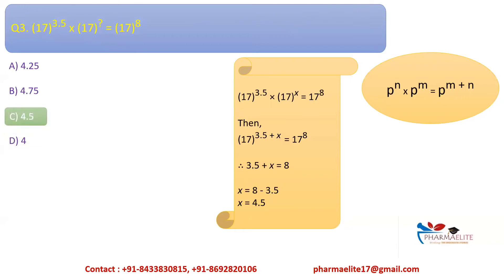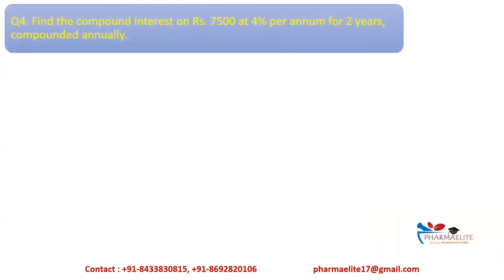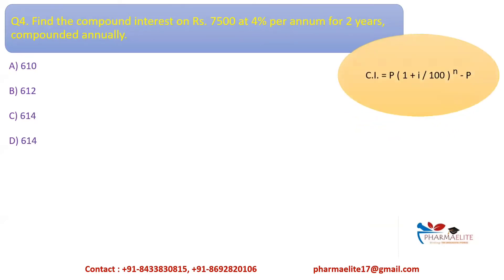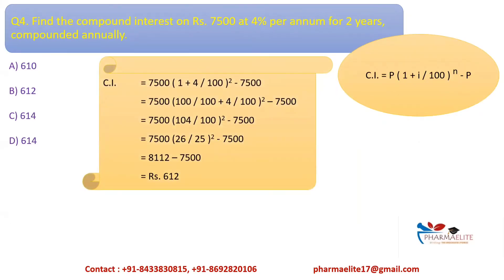Question 4: Find the compound interest on Rs. 7,500 at 4% per annum for 2 years, compounded annually. The compound interest formula is CI = P × (1 + I/100)^N − P, where P is the principal, I is the interest rate, and N is the term period. Substituting the given values and solving, we get compound interest as Rs. 612. The answer is option B.